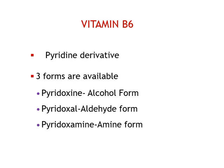Vitamin B6 consists of a mixture of three different closely related pyridine derivatives, namely pyridoxin, which is the alcohol form, and pyridoxal, which is the aldehyde form, and pyridoxamine, which is the amine form of the vitamin.